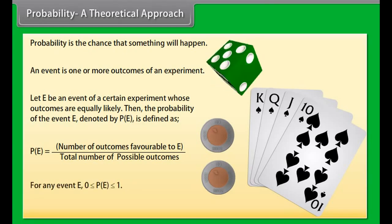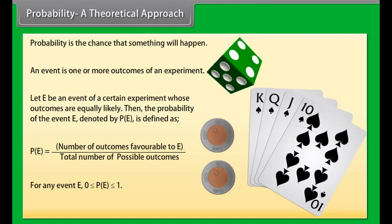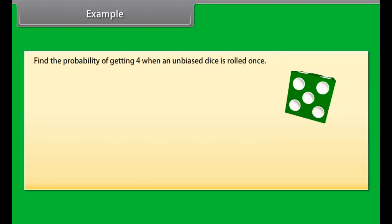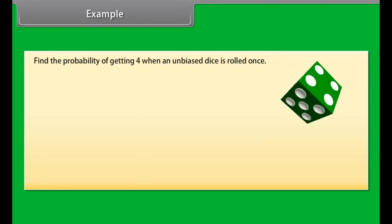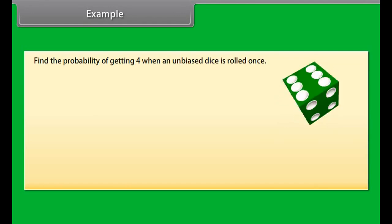For any event E, 0 is less than or equal to P(E) less than or equal to 1. Example: Find the probability of getting 4 when an unbiased dice is rolled once.